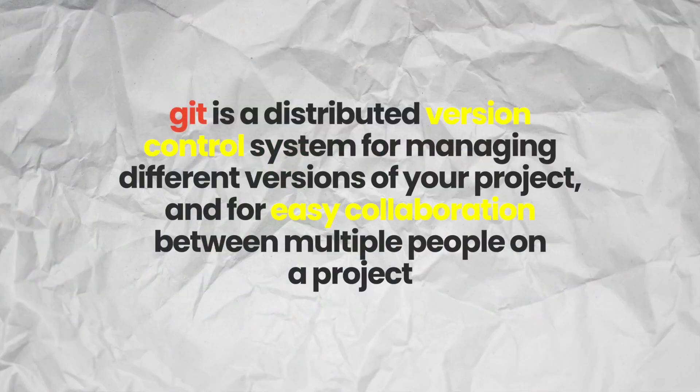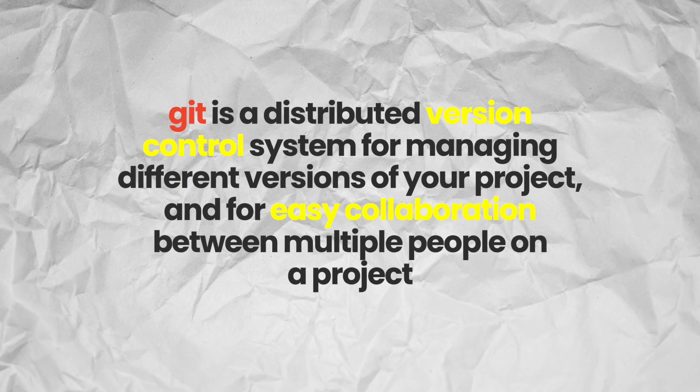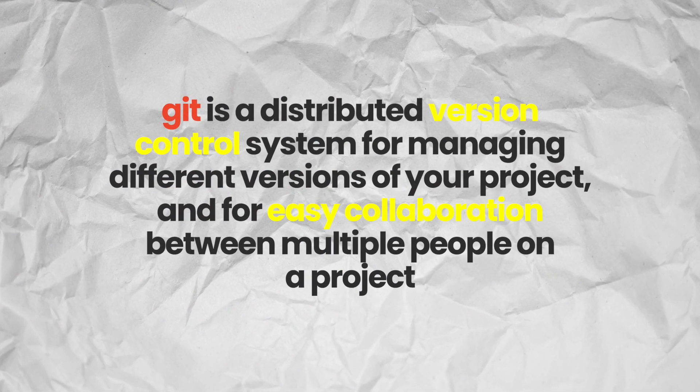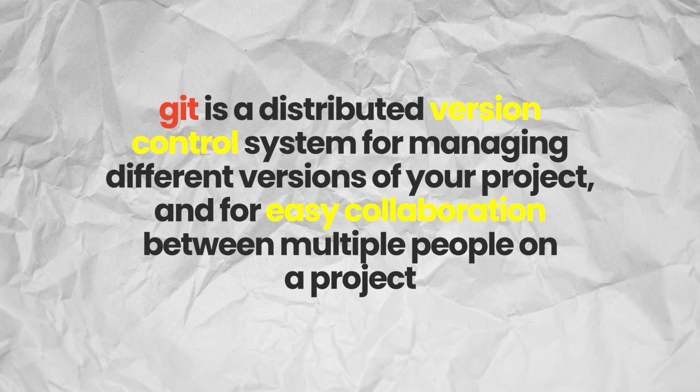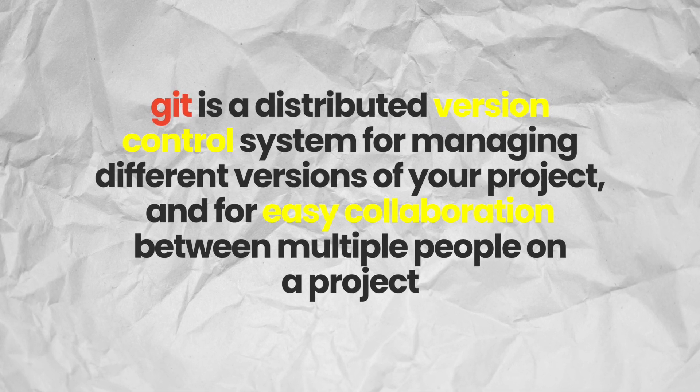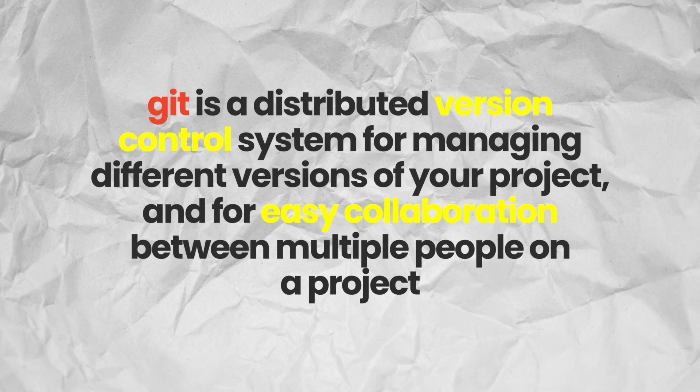A simple definition of Git is a distributed version control system for managing different versions of your project and for easy collaboration between multiple people on a project. Git is not the only tool that does this — there are a couple of tools that also achieve these same things, but Git is one of the most popular.